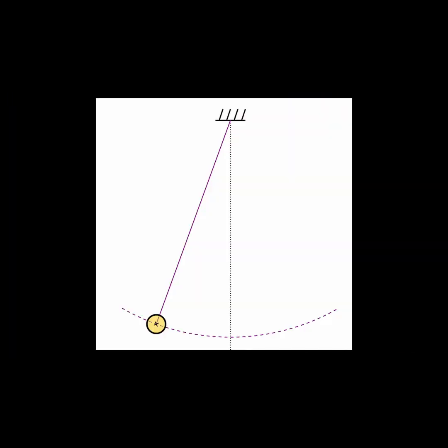But there's something strange here. If the mass swings through the bottom position of the pendulum, doesn't that mean that the energy is zero there since the height is zero? And if so, where did the energy go?